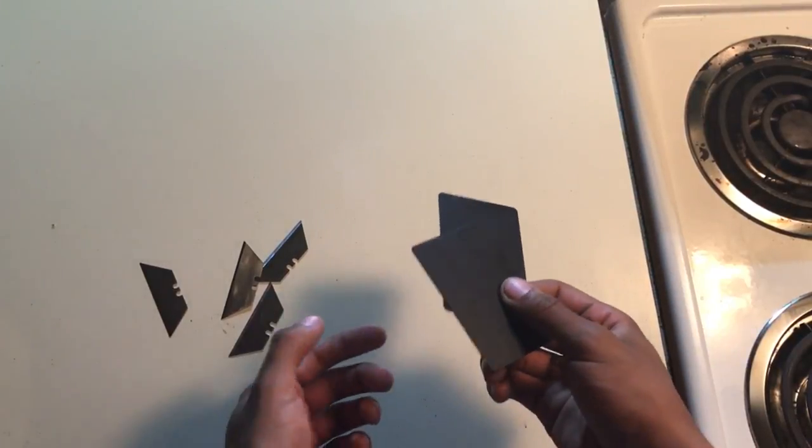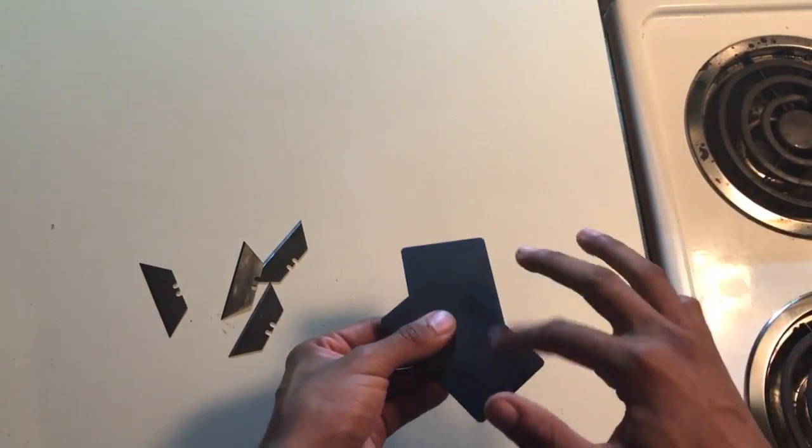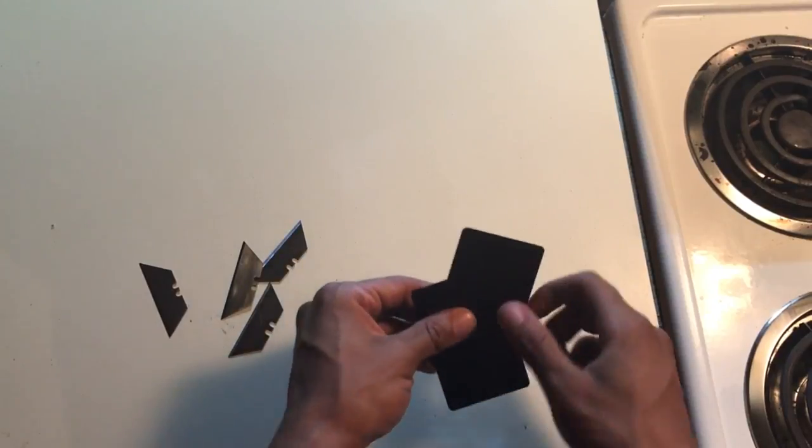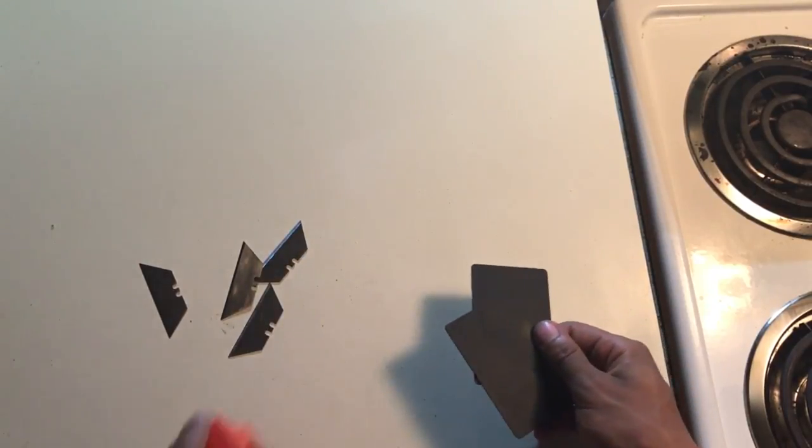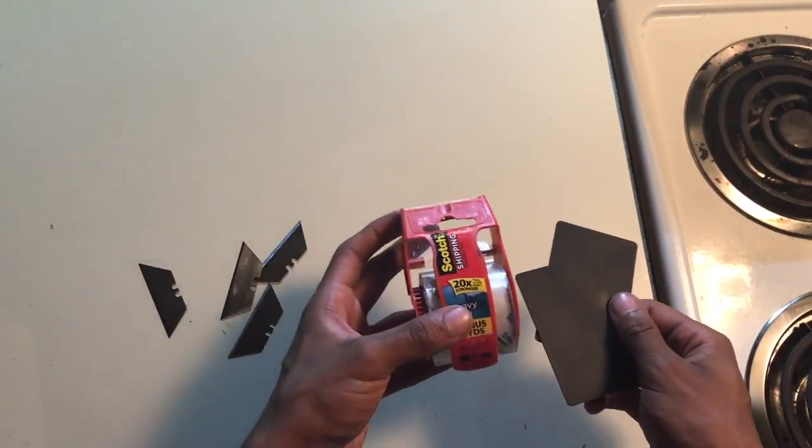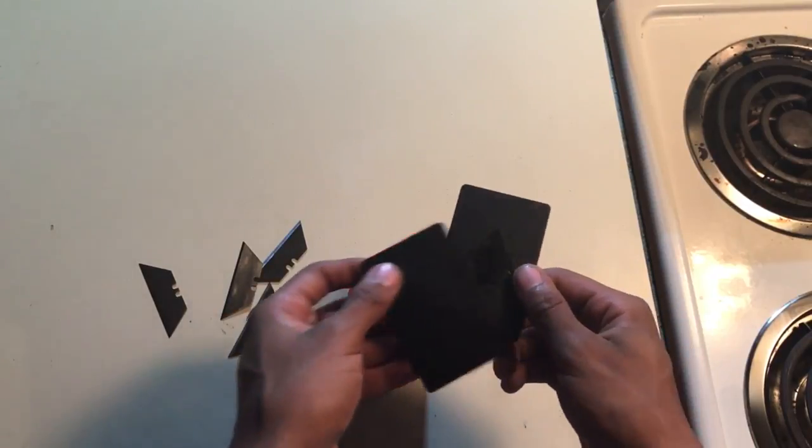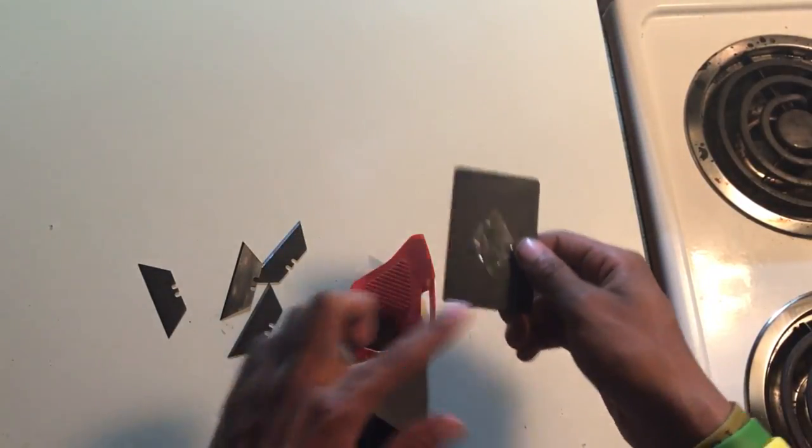All right, now, once you have your cards painted black or whatever the first layer of your color is, you're going to take them, and you're going to take your tape, and you're going to start to cut out your pattern.